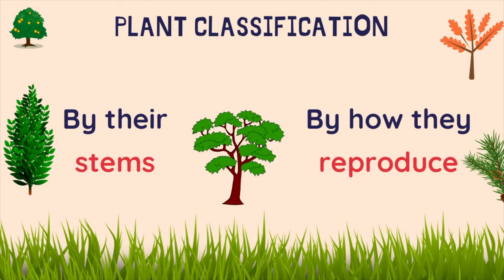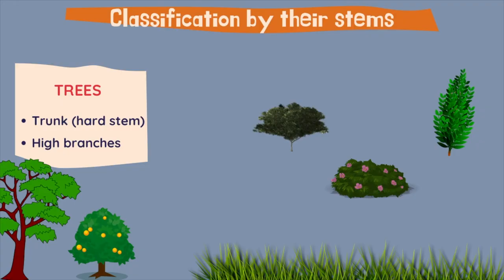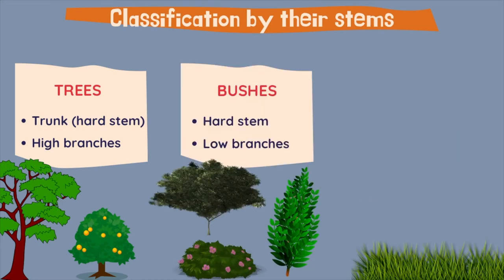Let's go first to the classification by their stems. Classifying the plants by their stems, we can find trees that have a trunk, which we can say it's a hard stem, and also they have high branches, like this one. Another type of plants are bushes, which have a hard stem like those ones.